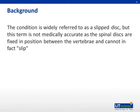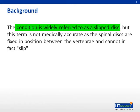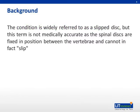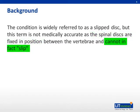What is lumbar disc herniation? It is a condition widely referred to as slipped disc. But in fact, this term is not medically accurate, as the spinal discs are fixed in position between the vertebrae and cannot slip. It is actually a result of a tear in the outer casing of the vertebral disc that allows the soft inner portion to bulge out, which may cause compression of associated nerve roots.